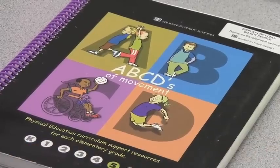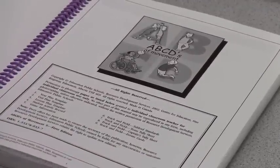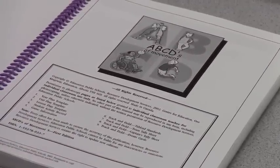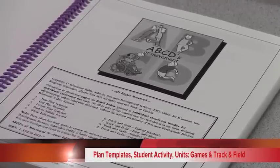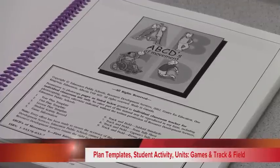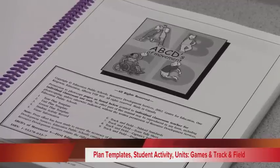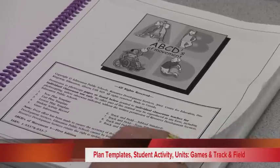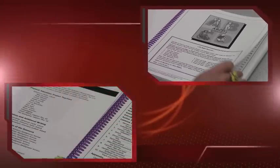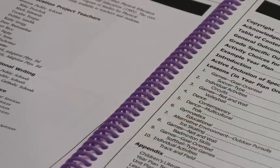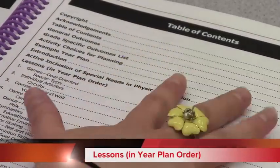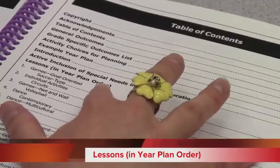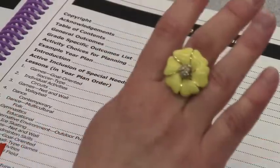The one I'm demoing today is the grade five resource. When you first open it, the first page gives you some ideas on year plan templates, unit plans, lesson plans, and then it focuses on different units — for example, games, individual activities, as well as dance and gymnastics. Looking at the table of contents, it breaks it down in a year plan order. That doesn't mean you have to follow it to a tee, but it gives you a really good outline of what to look at.